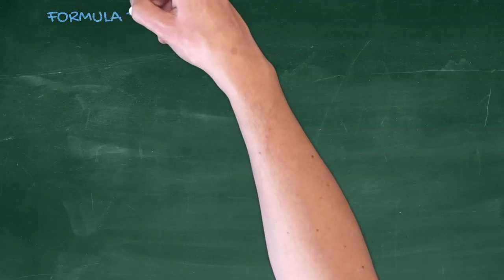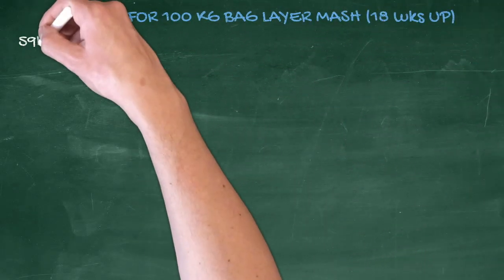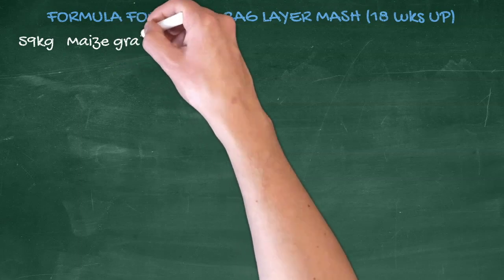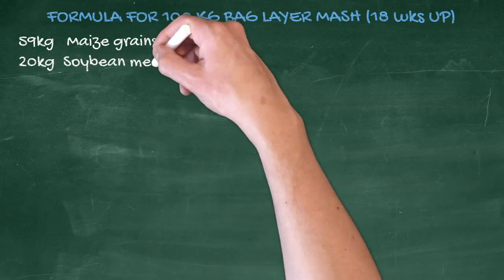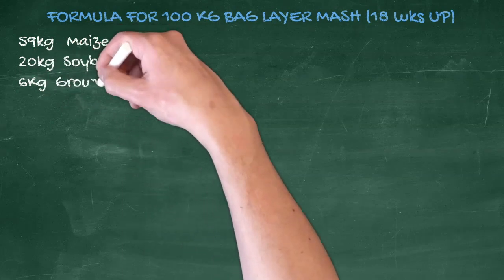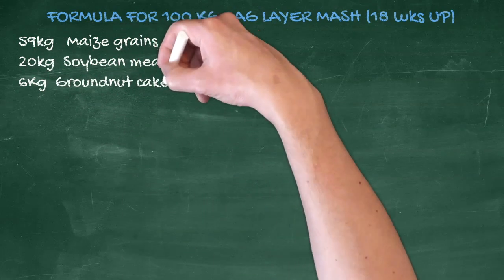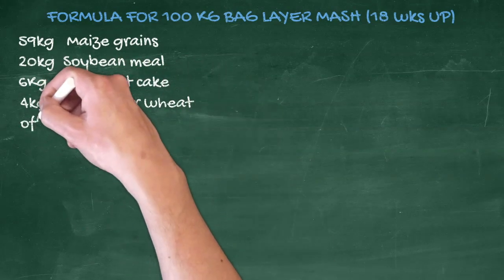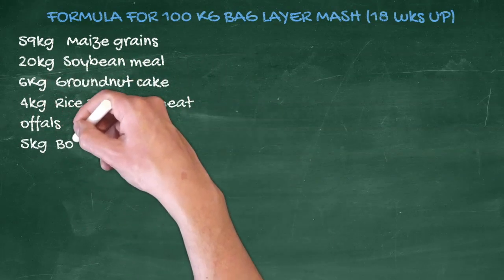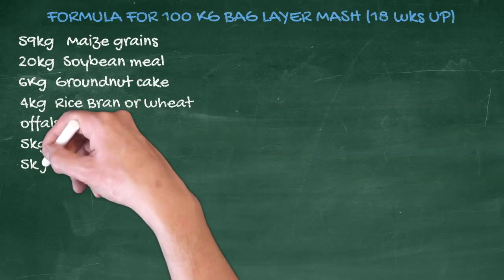Formula for 100 kg of layers mash, 18 weeks and above: 59 kg maize grains, 20 kg soybean meal, 6 kg groundnut cake, 4 kg rice bran or wheat offals, 5 kg bone meal, 5 kg limestone.